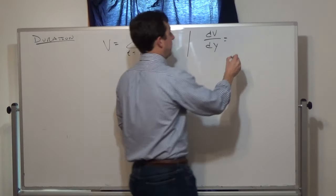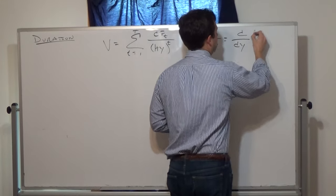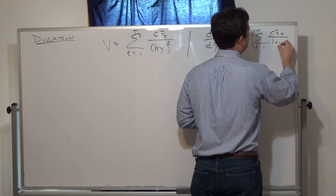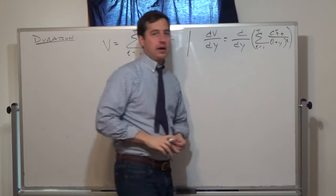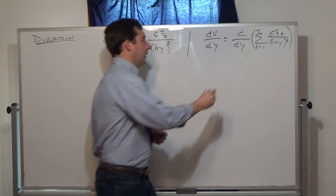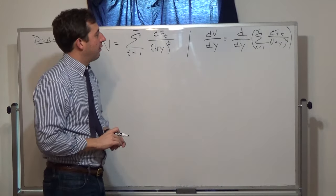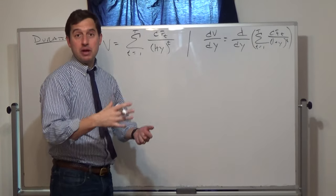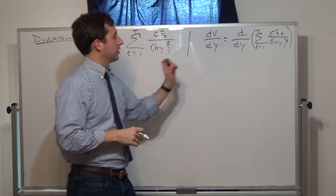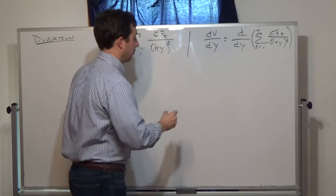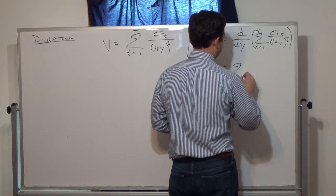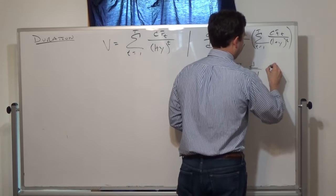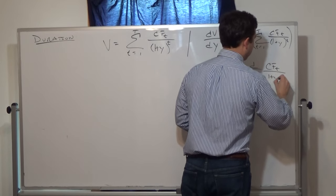This is going to equal the change in the yield times the sum from t equals 1 to big T of the cash flow at time t divided by 1 plus y to the t-th power. Now in introductory calculus courses, the derivative is a linear operator. You can show this from the fact that the derivative is a limit. So since the derivative is a linear operator, I can move it across the summation — this is equal to the sum of the derivative with respect to y of the cash flow at time t over 1 plus y to the t-th power.